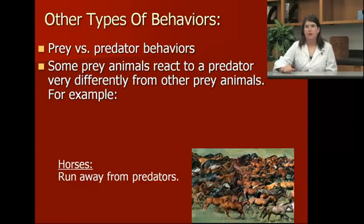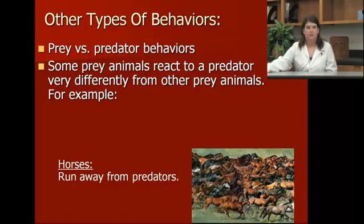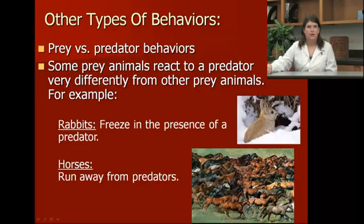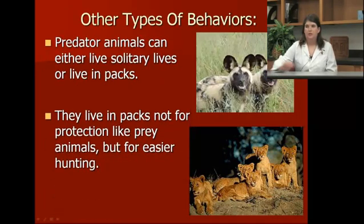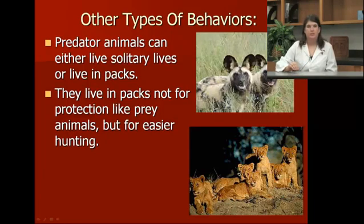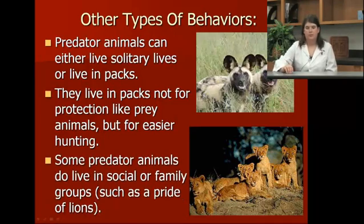Some other types of behavior are prey versus predator behaviors. Some prey animals react differently than others to predator animals. For example, rabbits tend to freeze when they see a predator coming, whereas horses run in the opposite direction. Some predator animals can either live in solitary packs or live in large family packs, and they live in packs not for protection, but just to make hunting easier. Some predators such as lions do live in family social packs, but for the most part it's to make hunting easier.